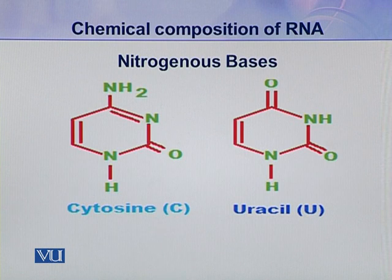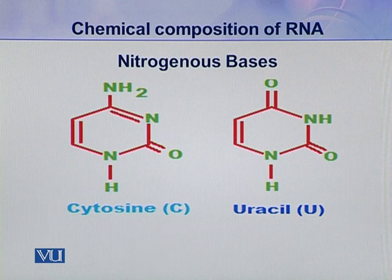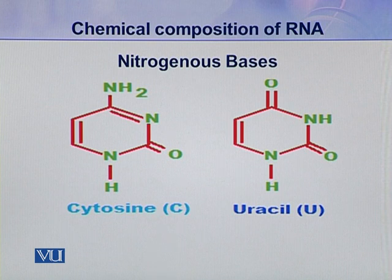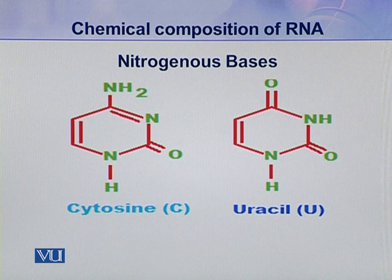The next two types of bases are pyrimidines — cytosine and uracil. You can see a difference here: in the case of DNA, uracil is not present; instead, thymine was present in the DNA molecule. But in RNA, instead of thymine, uracil is present. Overall, there are five types of nitrogenous bases: adenine, guanine, cytosine, thymine, and uracil. Thymine is only present in DNA molecules while uracil is only present in RNA molecules.